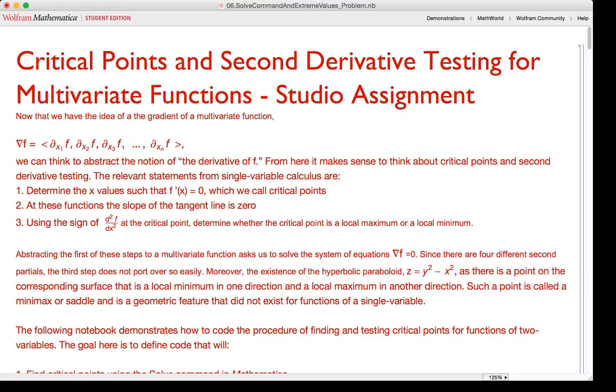So in single variable calculus, the derivative of f, f prime, was set to zero in order to calculate critical points. For multivariate calculus, we do that by setting the gradient equal to zero.